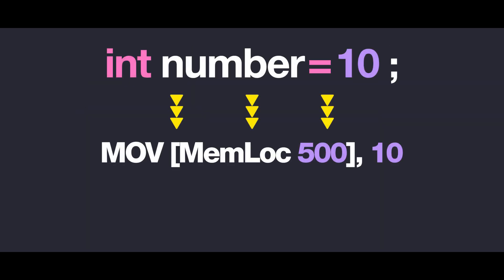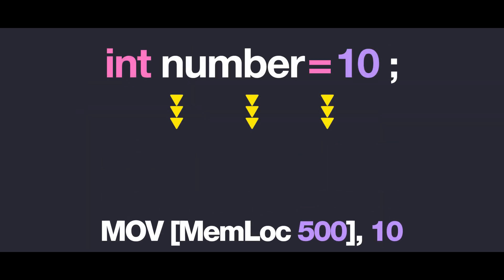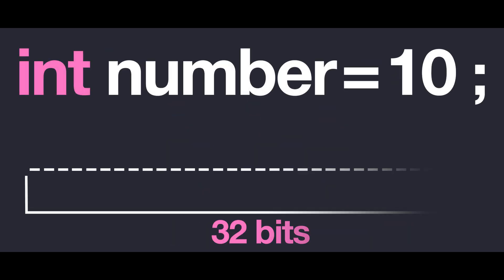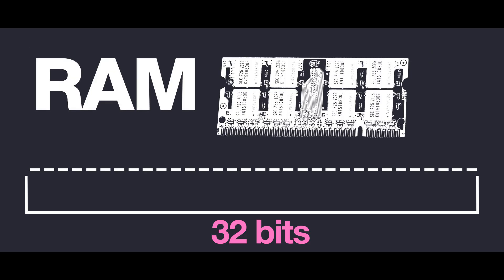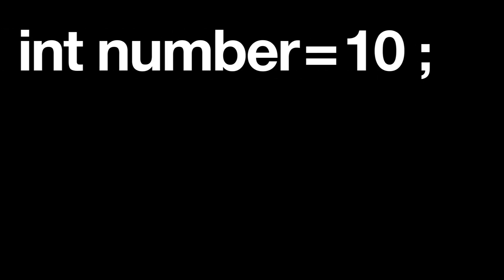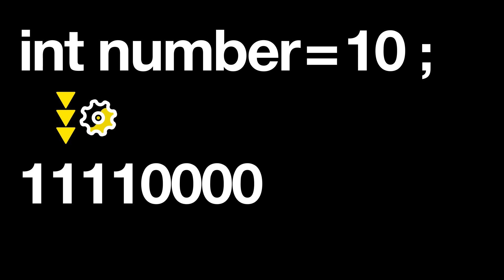The translation from a high-level language to machine language is done by the compiler. It saw the keyword and knew right away that it is an integer that needs 32 bits to be allocated by our RAM. So we reserve 32 microscopic electronic switches ready to be set on and off. However, we cannot jump directly from high-level code to zeros and ones.